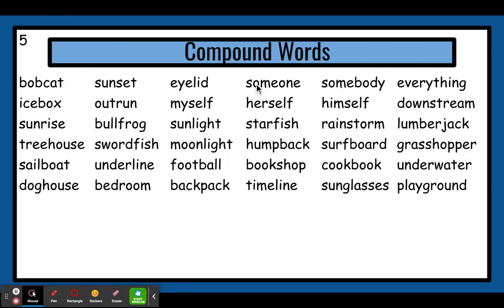Hello! How is everybody doing today? You ready to learn about compound words? Compound words are words that are made up of two smaller words. So a compound word is a big word, but it has two small words inside of it. You will see a word and a word, and we put them together to make a new, bigger word that means something different.